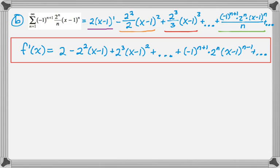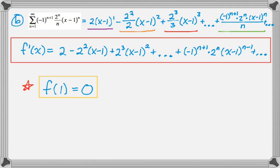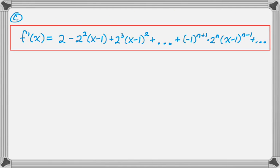One important note: if you plug x=1 into the original f(x), every term has a factor of (x−1), so f(1)=0. That will be crucial for solving for the constant of integration in the next part. The problem also tells us that f′ is actually a geometric series, which is helpful.